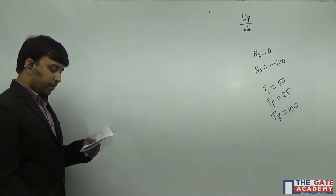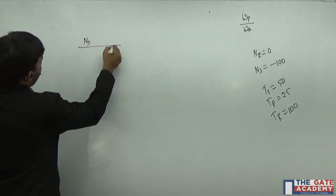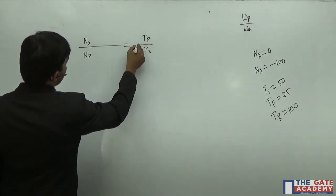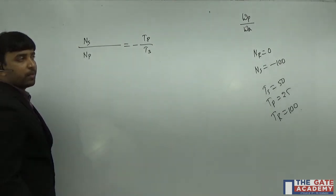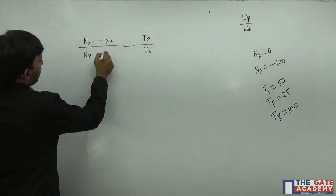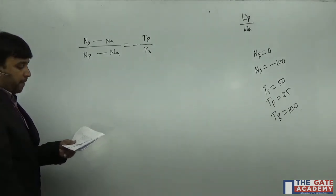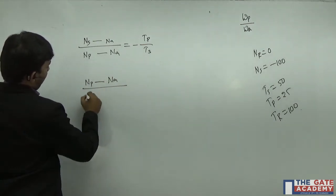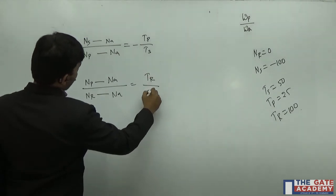The Sun gear and planet gear are in mesh. I can write: (speed of Sun − R) / (speed of planet − R) = −(number of teeth on planet / number of teeth on Sun). The negative sign is introduced because both are in external mesh and rotate in opposite directions. Similarly, the planet gear and outer ring gear are in mesh: (speed of planet − R) / (speed of ring − R) = number of teeth on ring / number of teeth on planet. Since this is an internal mesh, both rotate in the same direction.